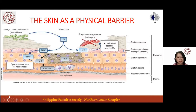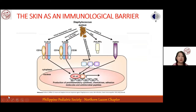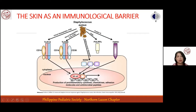The skin also acts as an immunologic barrier. Its immune response is vital for wounds and infections, and modulates the commensal microbiota colonizing the skin. Keratinocytes continuously sample the microbiota through pattern recognition receptors (PRRs), including toll-like receptors, NODs, and MANOS receptors, recognizing pathogen-associated molecular patterns (PAMPs). Activation of keratinocyte PRRs initiates the innate immune response, resulting in production of pro-inflammatory cytokines, chemokines, adhesion molecules, and antimicrobial peptides.